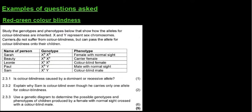We are going to look at some examples of questions asked in previous exam papers with regards to sex-linked disorders. The first one we'll look at is red-green color blindness. Study the genotypes and phenotypes below that show how the alleles for color blindness are inherited. X and Y represent sex chromosomes.